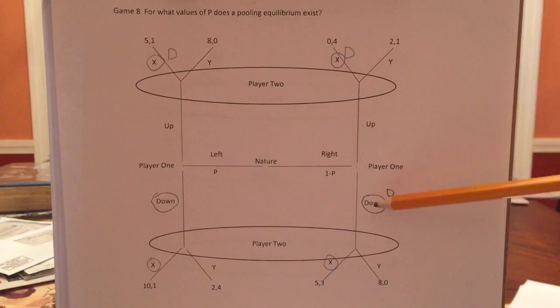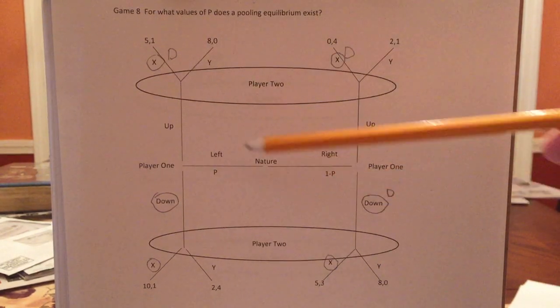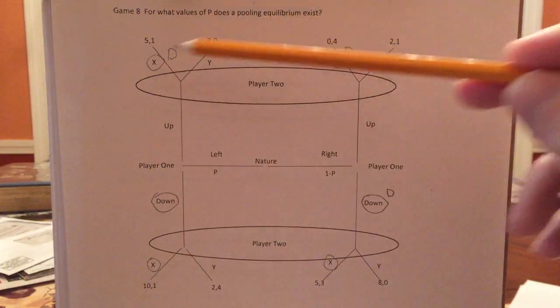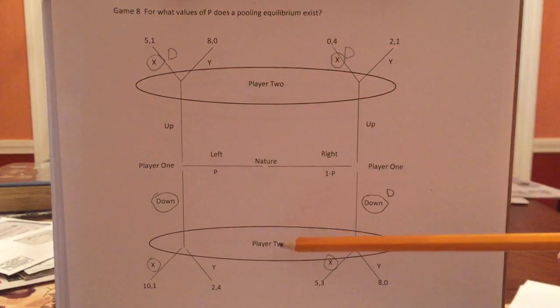Player one, if you're a righty, now you never regret your dominant strategy. Player two, if you're told up is played, of course you don't regret your dominant strategy. How could you?